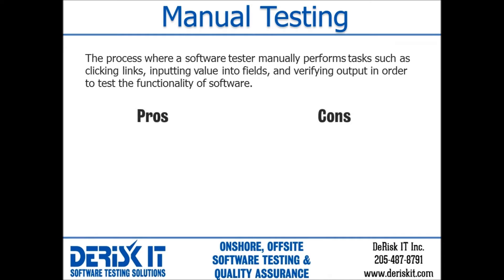A major pro of manual testing is that it's always necessary. If your company is continually developing and modifying software, manual testing is always going to be an essential part of the software development life cycle. Automation will work best for areas that do not undergo much alteration. Another pro is human judgment and intuition — a tester can use their knowledge and experience to judge whether the software is functioning as expected and find real user issues. An automated script may pass over and miss something that a tester would notice during manual testing.